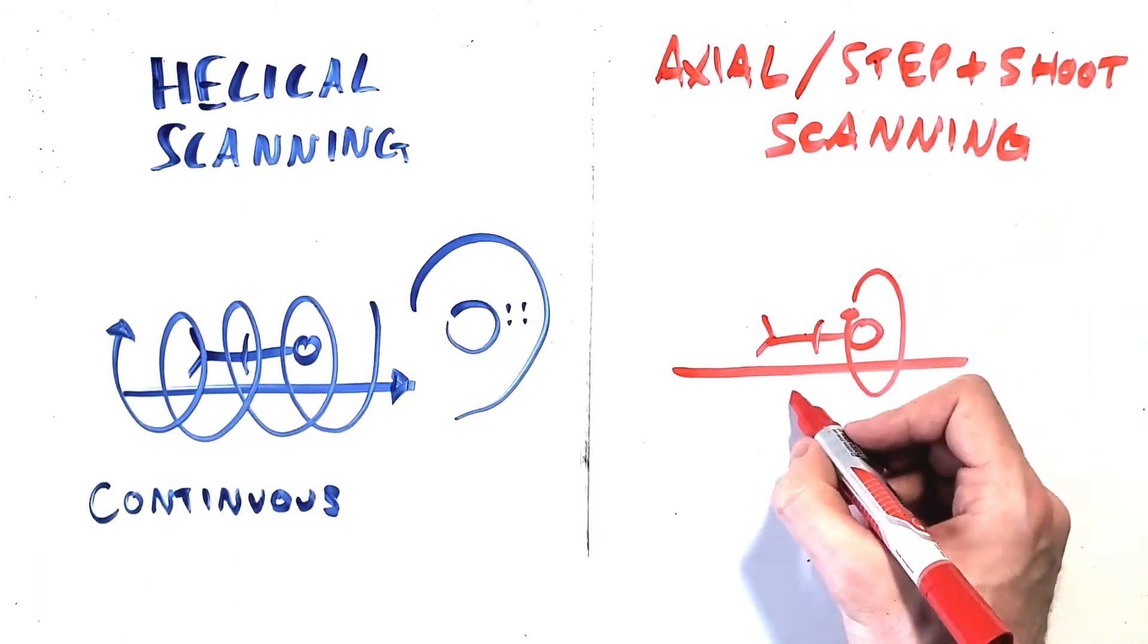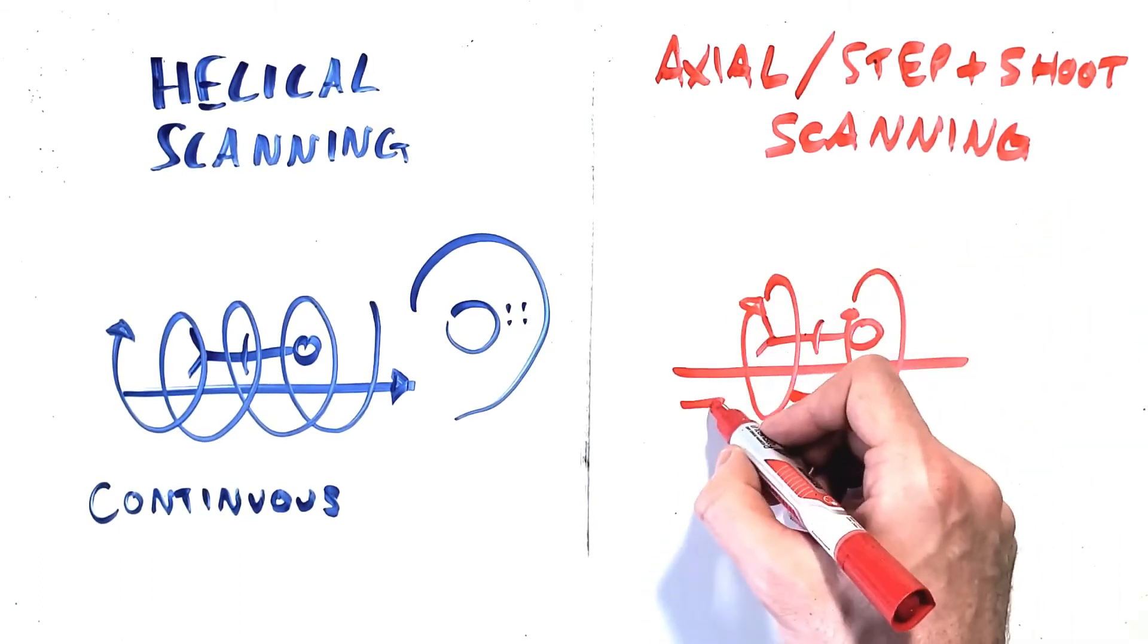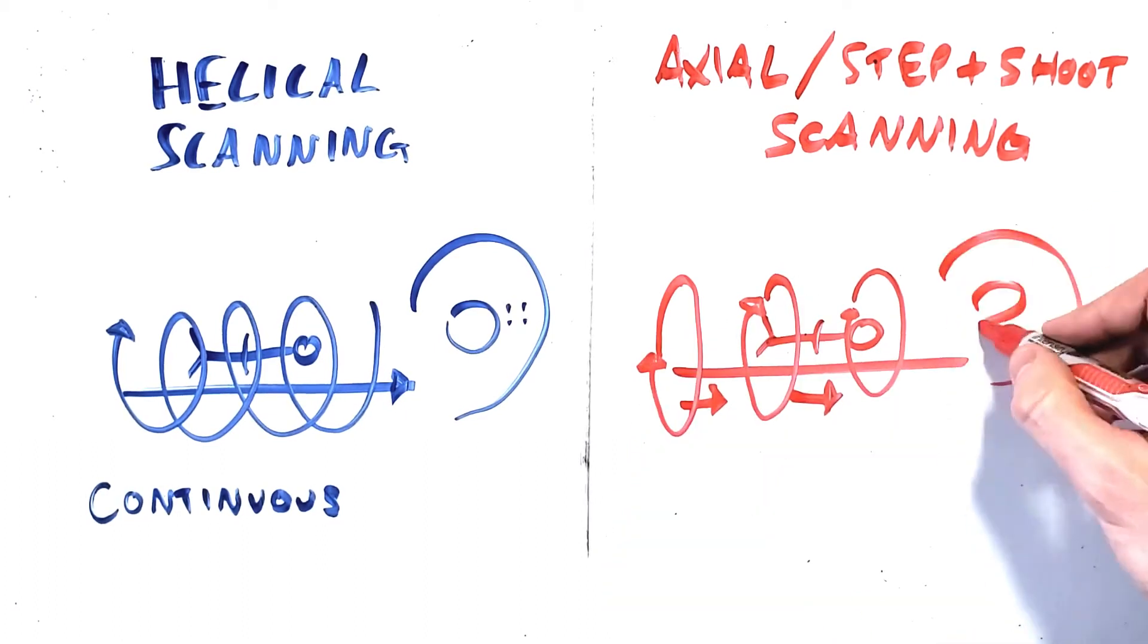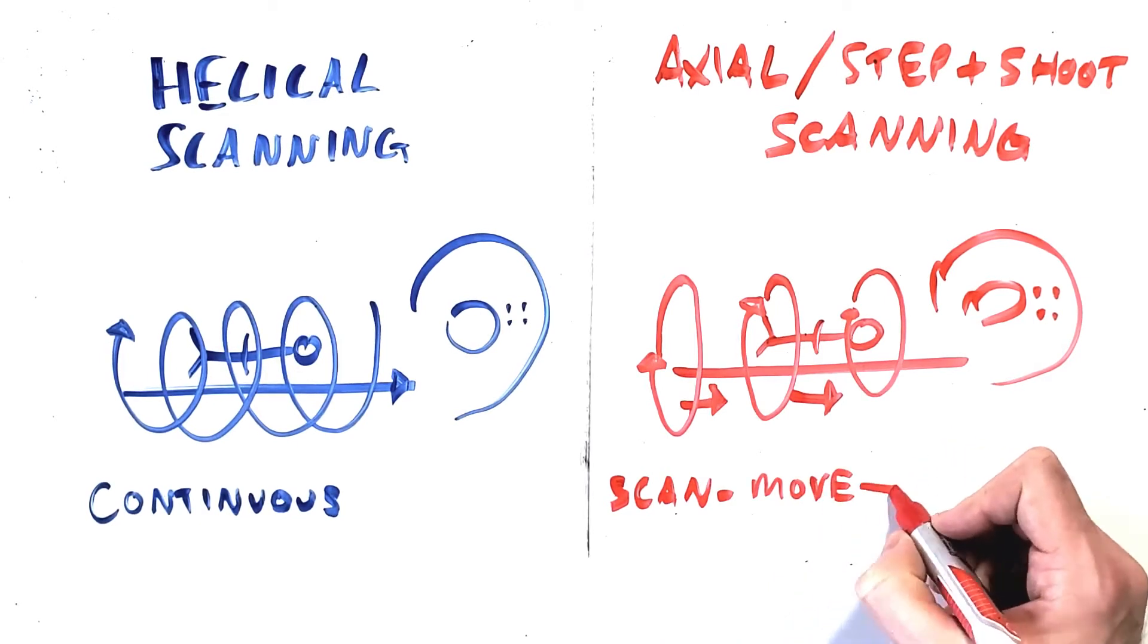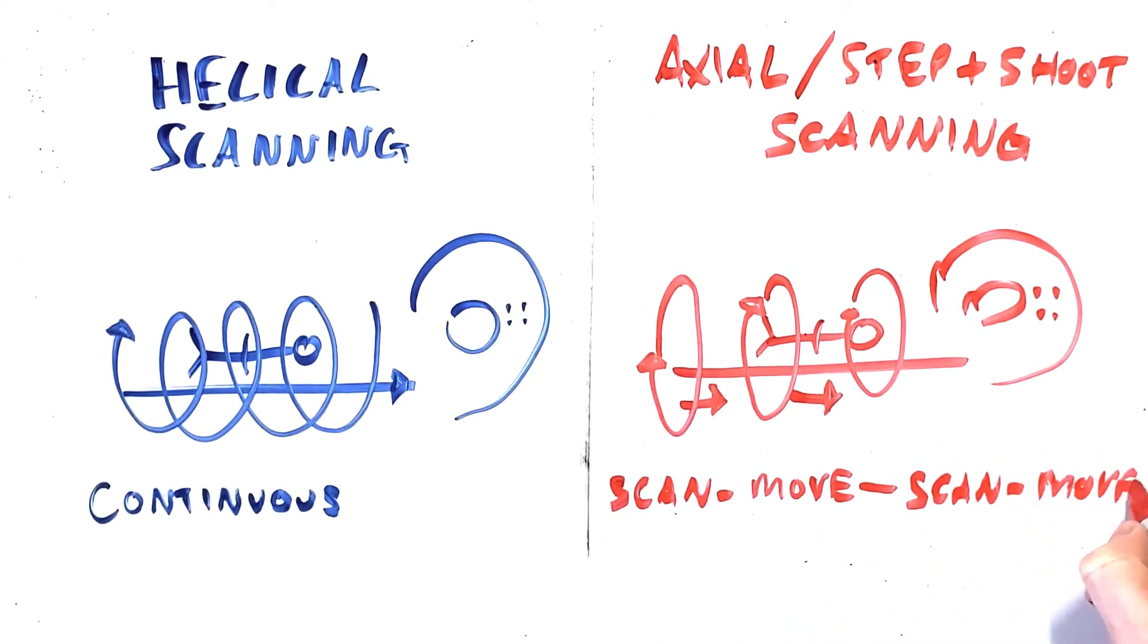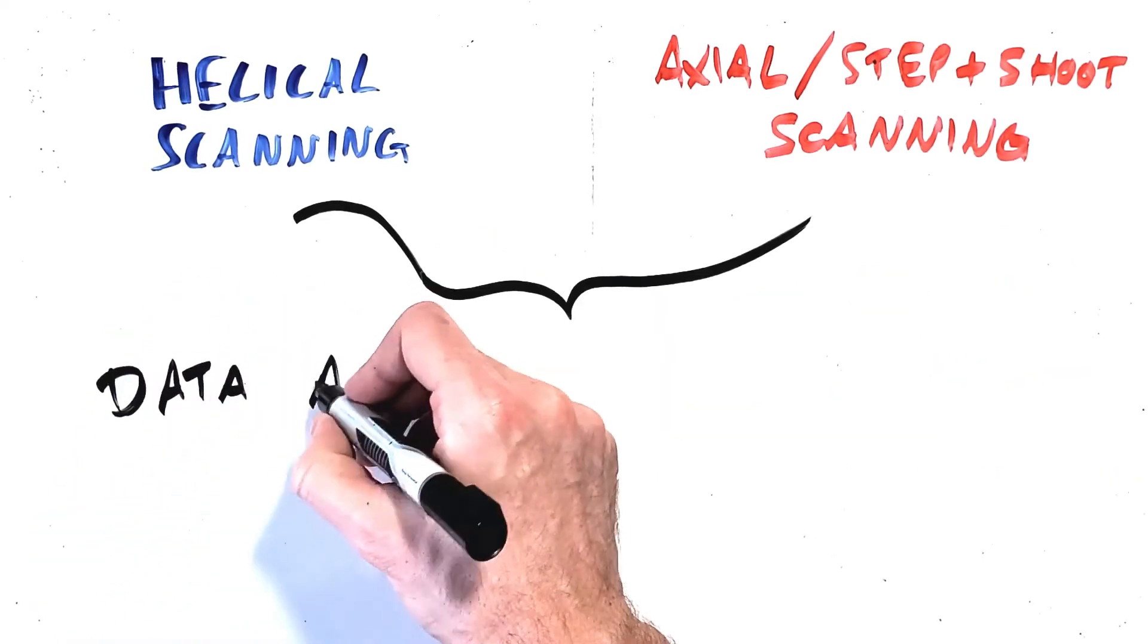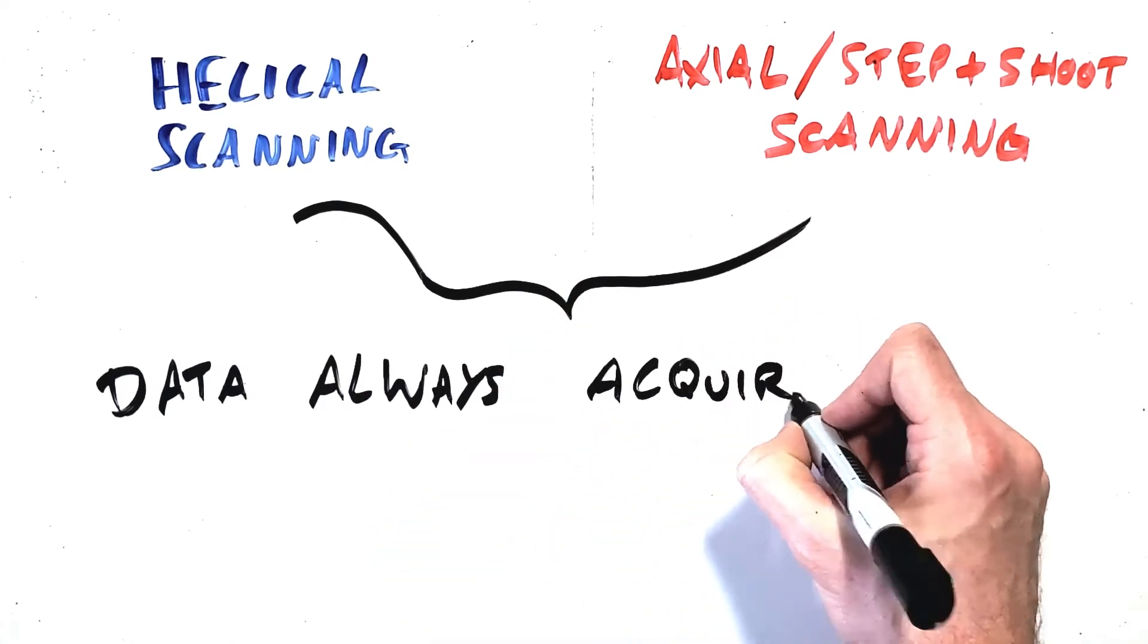Now the terminology here can be confusing because when conducting a helical scan we are still considering that to be acquiring data in the axial plane. In CT we're always scanning in the axial plane, but the difference between helical scan mode and an axial scan mode just refers to this difference of continuous scanning in a spiral versus step and shoot scanning in discrete slices.